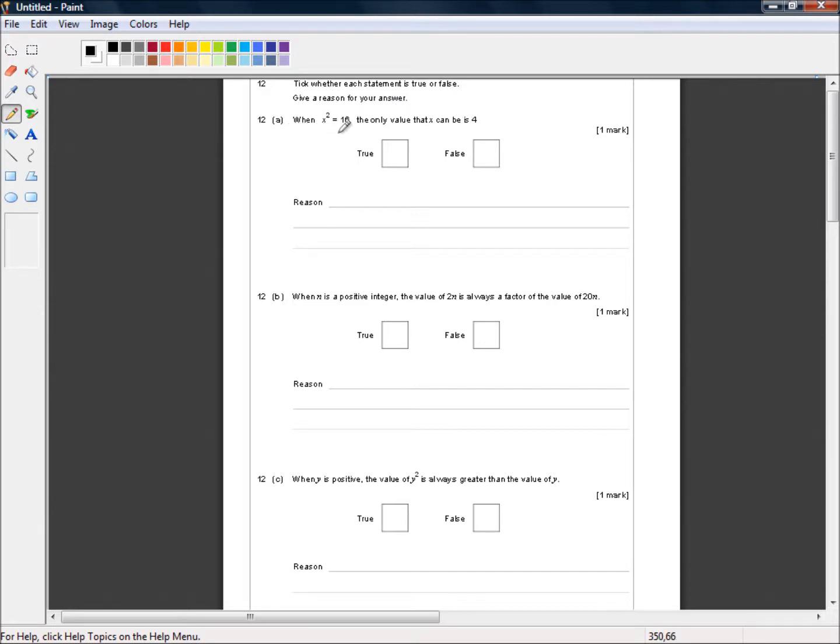When x squared equals 16, the only value that x can be is 4. Well, that's obviously false. Minus 4 squared equals 16.